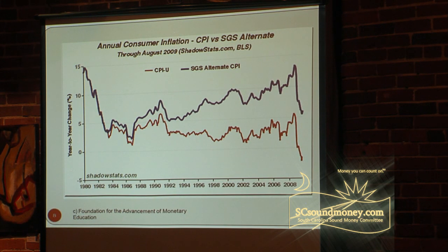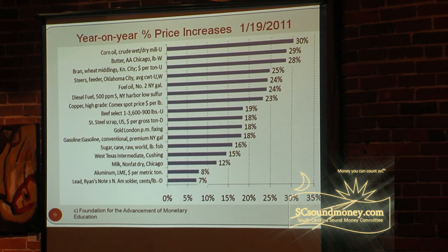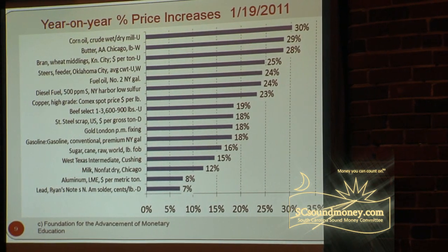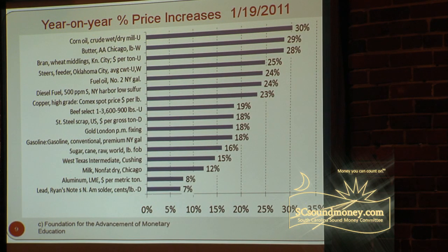This comes home almost every day, every time someone goes to the store. This next slide shows the year-on-year price differences of some common commodities: corn oil up 30 percent, butter up 29 percent, canola oil up 24 percent — double-digit increases in prices across the board every time you go to the store.